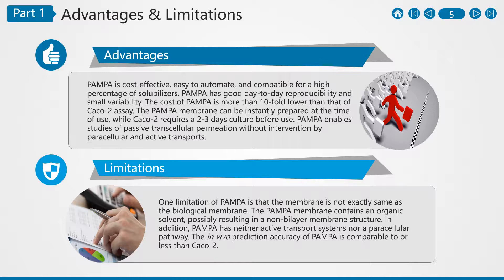PAMPA enables the study of passive transcellular permeation without intervention by paracellular and active transport. A limitation of PAMPA is that the membrane is not exactly the same as the biological membrane. The PAMPA membrane contains an organic solvent, possibly resulting in a non-bilayer membrane structure. In addition, PAMPA has neither active transport systems nor a paracellular pathway. The in vivo prediction accuracy of PAMPA is comparable to or less than CACO2.